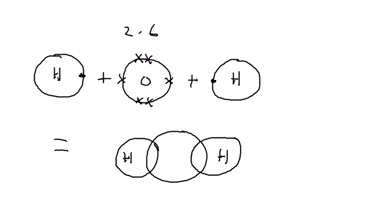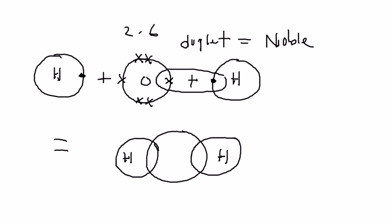One electron from hydrogen will share with another electron from oxygen so that it will form a duplet — the noble gas electronic configuration. So you have one dot from hydrogen and one cross from oxygen in the overlapping area. The same applies to the other hydrogen sharing with oxygen on that side.